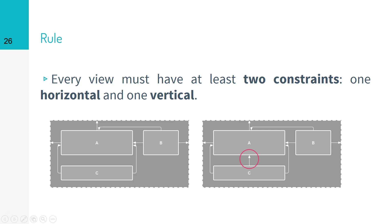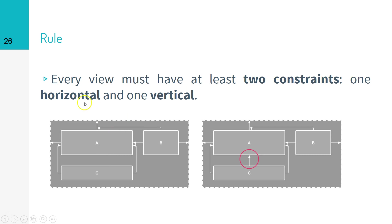In order to create a user interface using ConstraintLayout, we must add constraints to each view. There is a horizontal constraint and a vertical constraint. The rule is we need at least two constraints — one for the horizontal and one for the vertical.